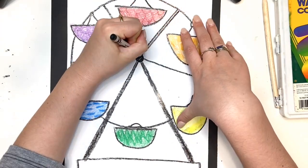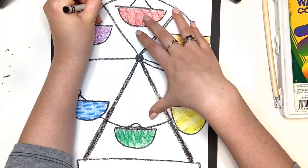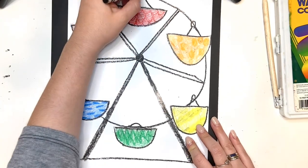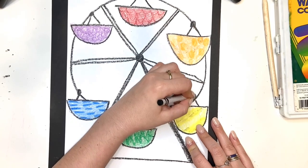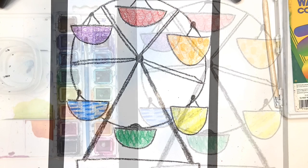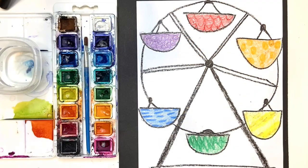Now I'm going to add a couple more details to my ferris wheel, which is just spur of the moment. You can add whatever kind of decorations you'd like. Maybe you want to add people or maybe you want to draw a tree. It's up to you. But when you're ready, we're going to move on to the background, which is watercolor.